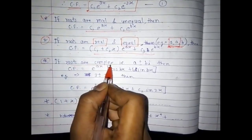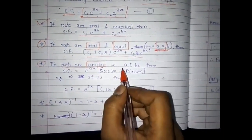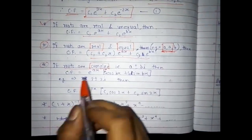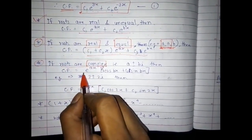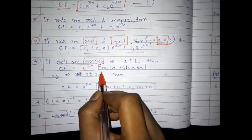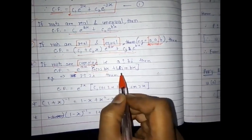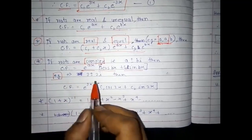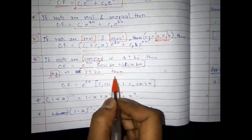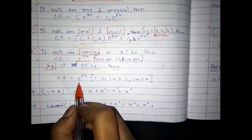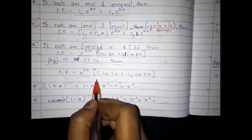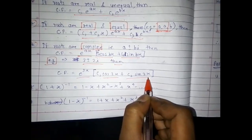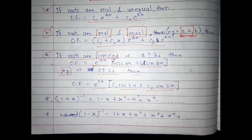If the roots are complex — that is, a ± bi — then the complementary function is CF = e^(ax)[c₁cos(bx) + c₂sin(bx)]. For example, if roots are 3 ± 2i, then the equation becomes e^(3x)[c₁cos(2x) + c₂sin(2x)].